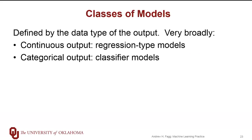One of the first key dimensions is what kinds of outputs do our models generate. The two broad subcategories are continuous output versus categorical output. Continuous outputs we generally think of in terms of regression kinds of problems. For categorical outputs, classifier types of models are used.